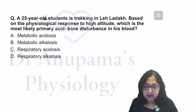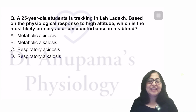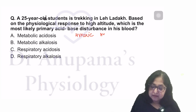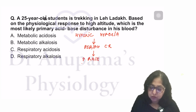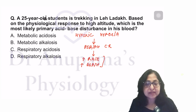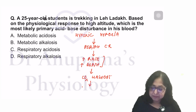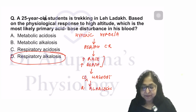A 25-year-old student is trekking at high altitude. Based on physiological response to high altitude, what is the most likely primary acid-base disturbance? At high altitude, there is hypoxic hypoxia, which stimulates the peripheral chemoreceptors — the carotid and aortic bodies. This causes an increase in rate and depth of ventilation, increasing total and alveolar ventilation, which causes CO2 washout. The result is a respiratory alkalosis — that is the primary acid-base disturbance.